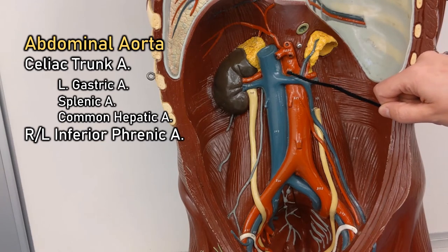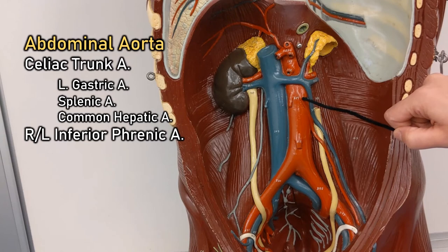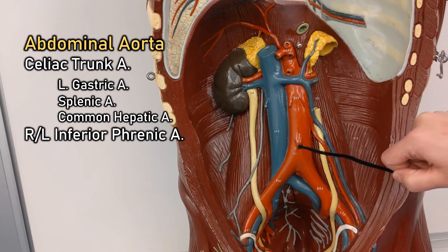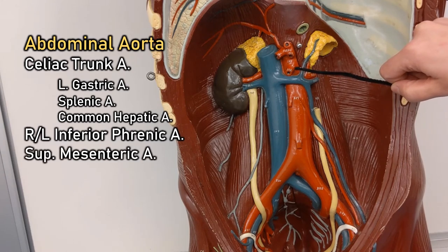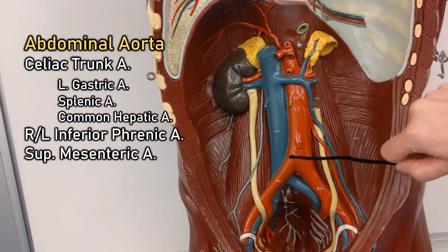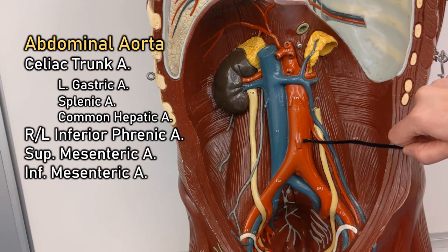Then there's this singular artery — skipping the two in the middle — this one is the superior mesenteric artery. The one on the bottom is the inferior mesenteric artery.